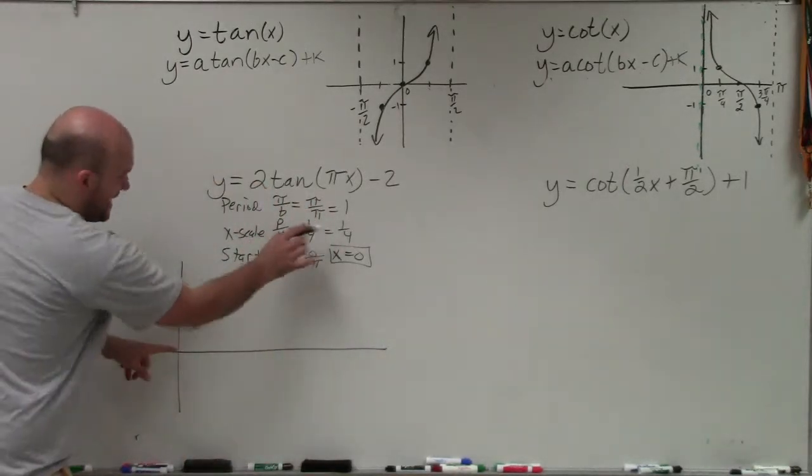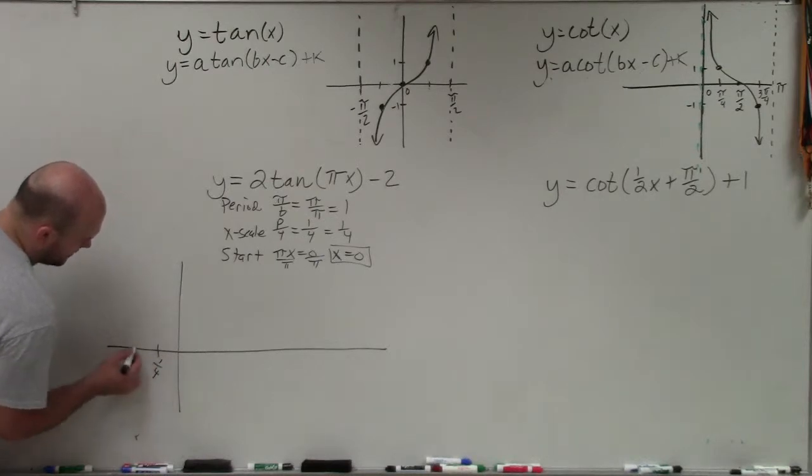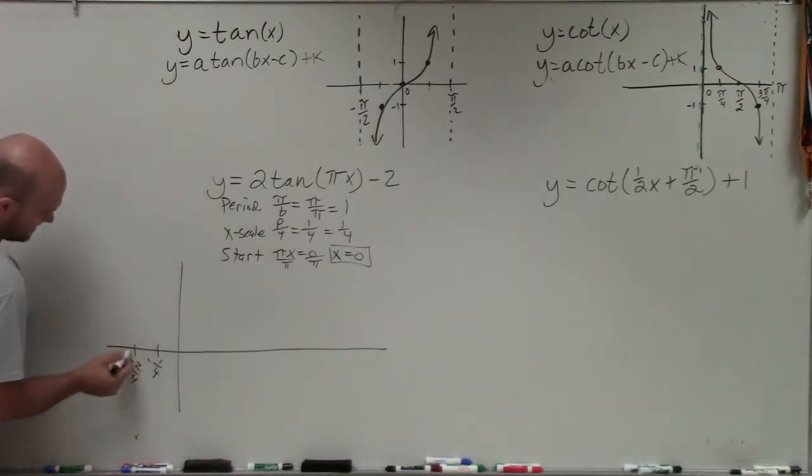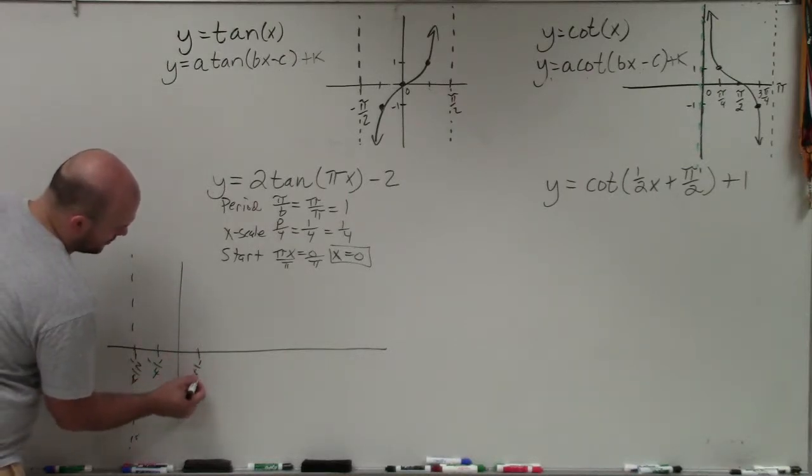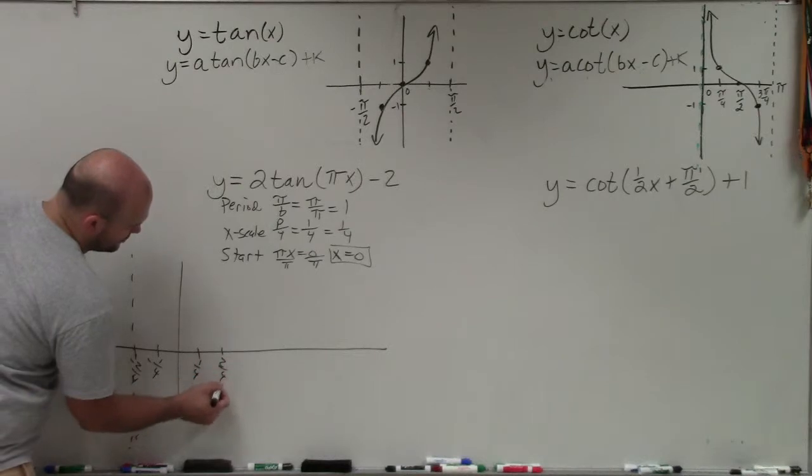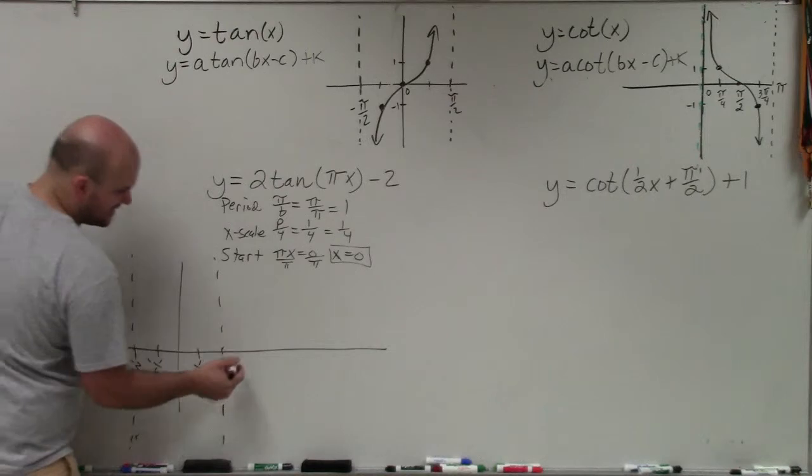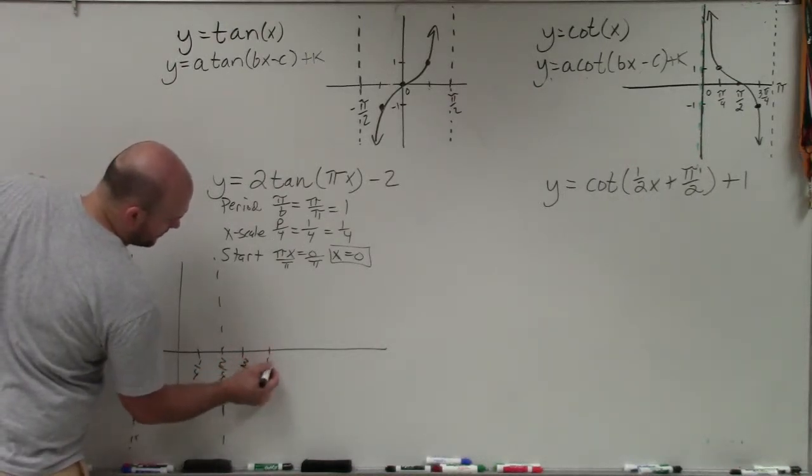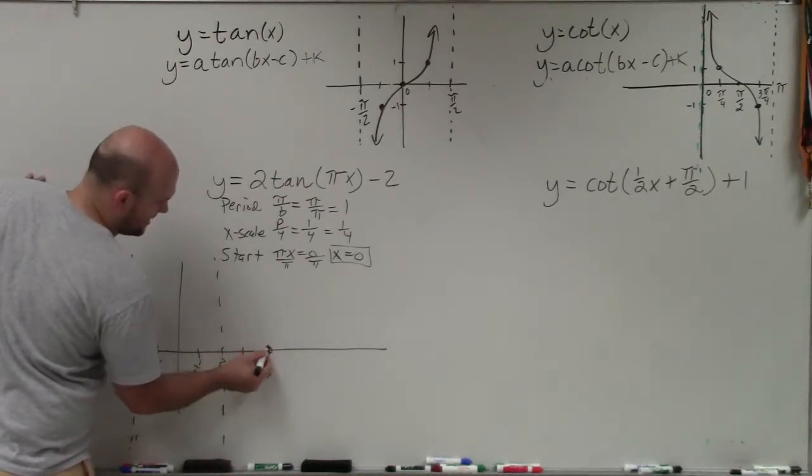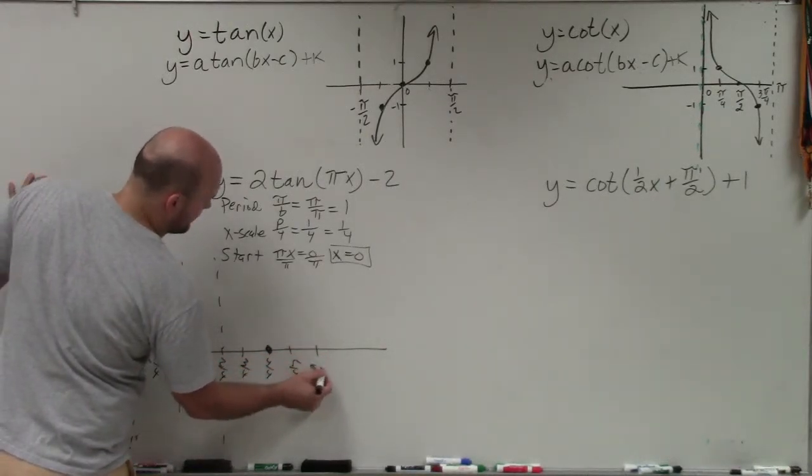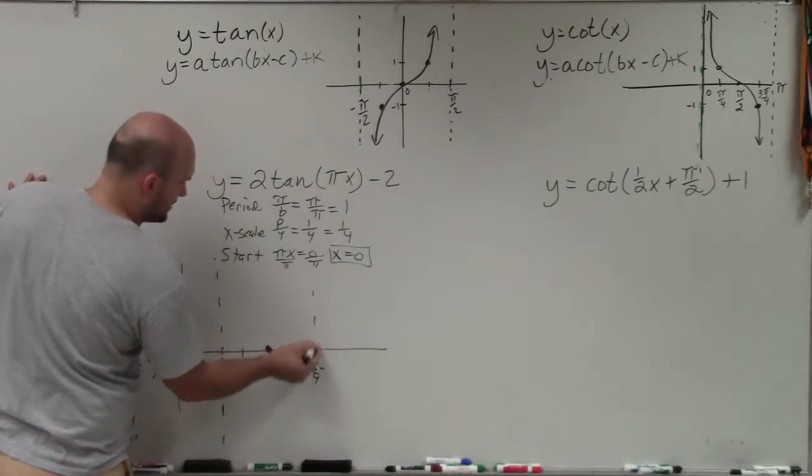So if this is at 0, my x scale is going to be 1/4. I'm sorry, negative 1/4. Then this would be negative 2/4. And I'll go by fourths here just to make everything easy. That's going to be my inner, my asymptote. So this would be 1/4, 2/4, my other asymptote. That's going to be my first period. Then let's go to the next period. 3/4, 4/4, that's going to be my intercept. 5/4, 6/4, and that would be my other asymptote.